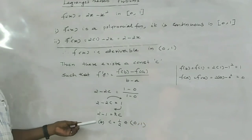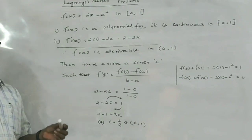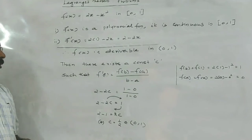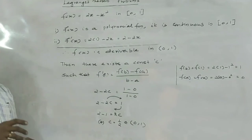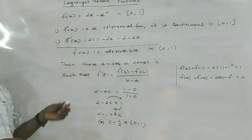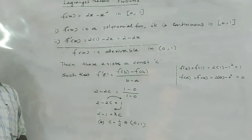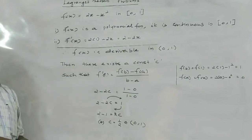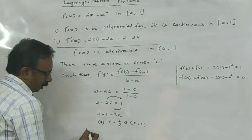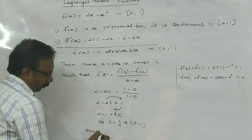The constant C equals one half, which lies between 0 and 1. Hence Lagrange's mean value theorem is verified.